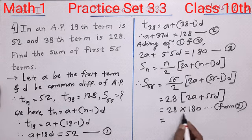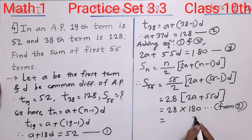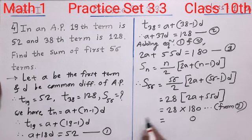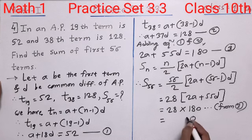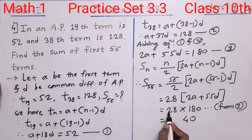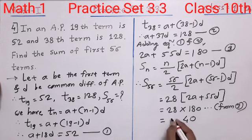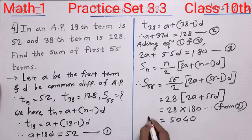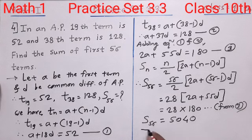For the multiplication of 28 by 180: we multiply 28 by 18 to get 504, then place the zero, giving 5040. So the sum of the first 56 terms is 5040. This is our final answer.